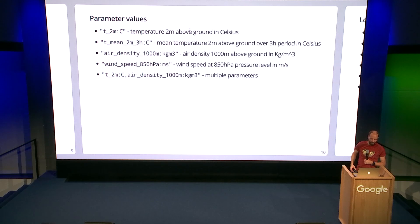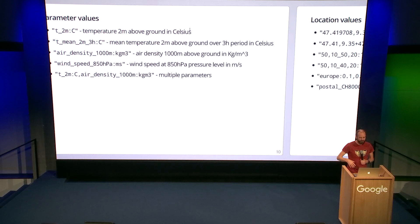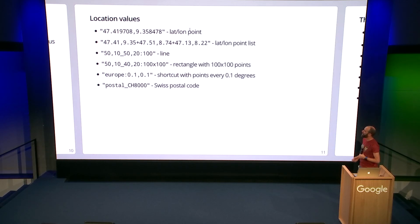Similarly, for the parameters, the different weather data that you want, and the units you want it in, and the altitude that you want it measured at are all expressed in this way and end up as a string. Finally, for location as well. You've got everything from single latitude, longitude points, to grids with n by n points, or a point every 0.1 degrees. You can do stuff along a path, put in postcodes for different countries. There's a whole load of stuff here.